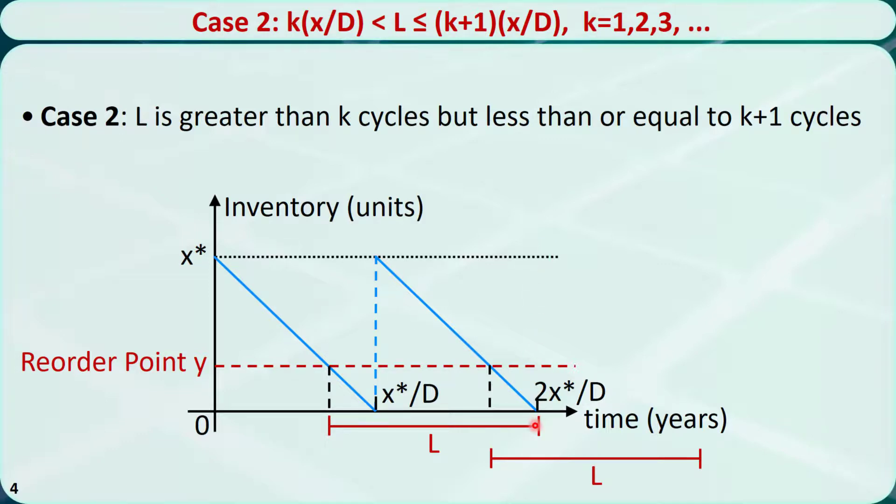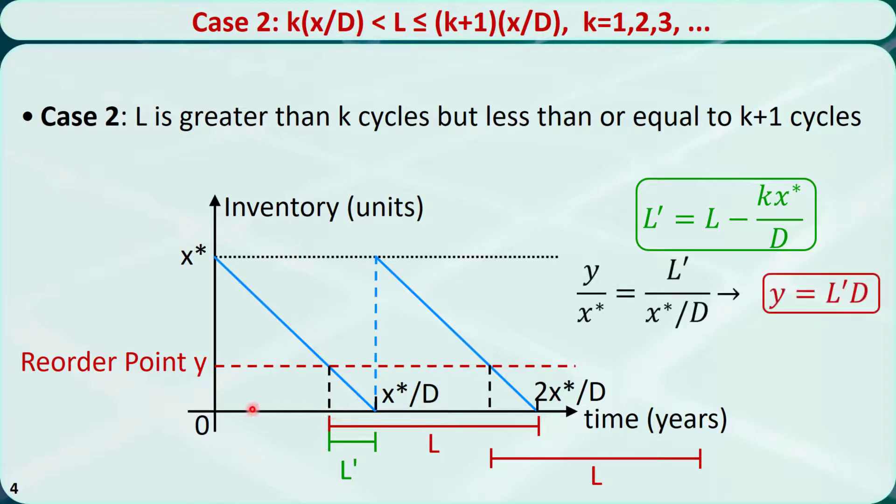Let L prime be the lead time that is beyond k cycles. In this case, the ratio of this side to this side, that is, y to x star, must be equal to the ratio of this side to this side, that is, L prime to x star over D. From this equation, we get this result. The inventory level equals L prime D.